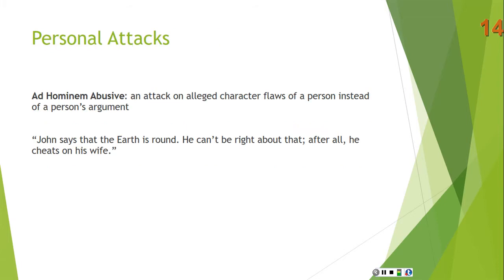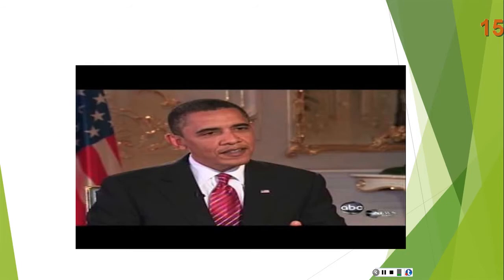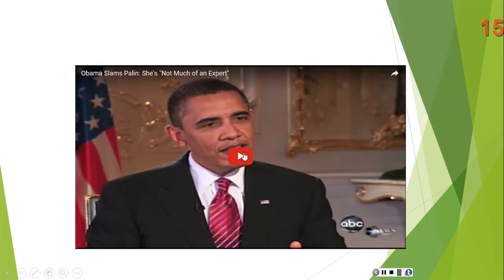Ad hominem abusive is one type of personal attack — an attack on alleged character flaws of a person instead of their argument. We saw this already: John says that the earth is round. Well, you can't be right about that — after all, he cheats on his wife. Whether or not John cheats on his wife is irrelevant to the truth of the claim that the earth is round. To reject John's claim simply because he cheats on his wife would be fallacious. Let's watch a video in which the fallacy of ad hominem abusive is committed by former president Barack Obama — see if you can spot it.